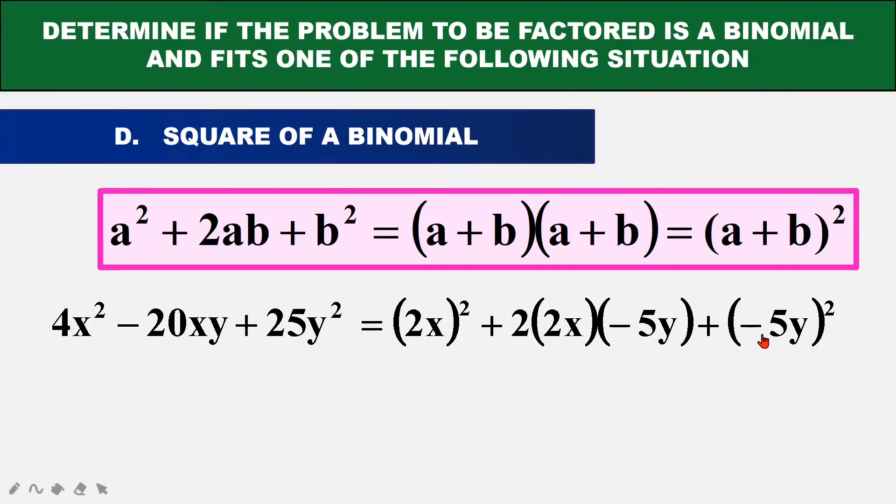Next thing is, I'm going to throw this into the formula. So the A will be 2X and the B will be negative 5Y. So I will put it inside the formula and I will get 2X minus 5Y multiplied by 2X minus 5Y. Once I have that, I notice they are the same, so I will write it as 2X minus 5Y squared.